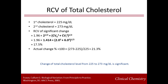For total cholesterol, the RCV of significant change is calculated to be 17.5%, using an analytical variation of 2.0% and within-subject variation of 6.0%. The within-subject variation of total cholesterol is taken from the book Biological Variation: From Principle to Practice by Fraser. The actual change of total cholesterol was calculated to be 21.3%. Since the actual change was larger than the RCV of significant change, the change of total cholesterol from 225 to 273 mg/dL was significant.